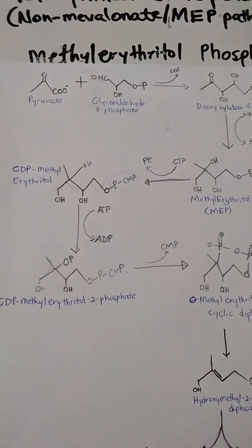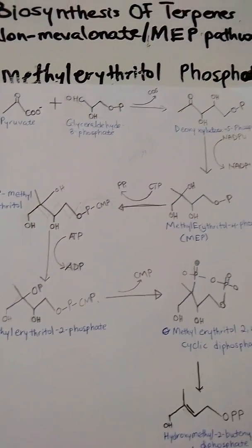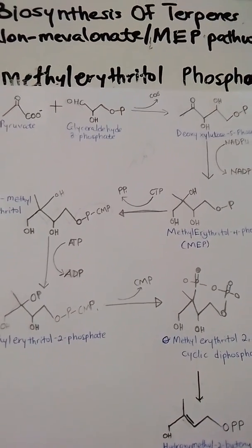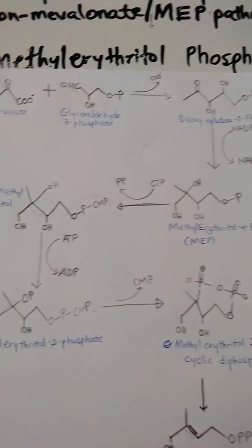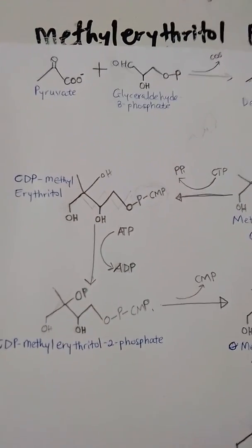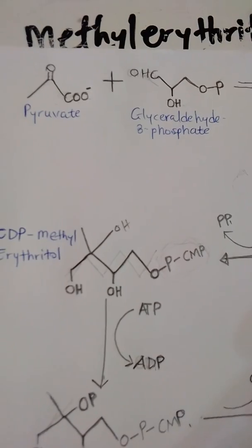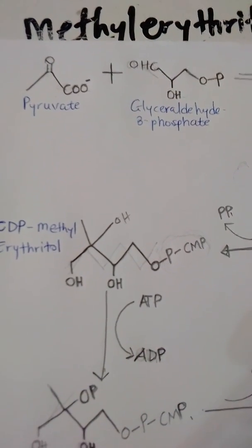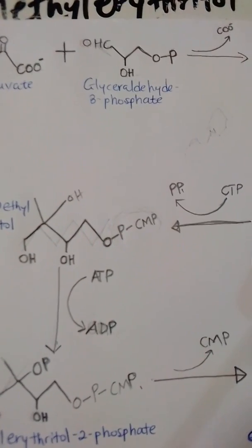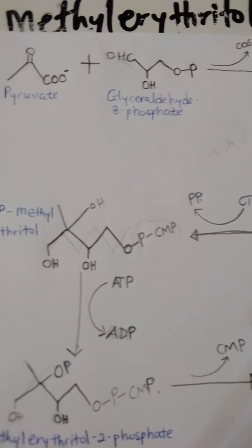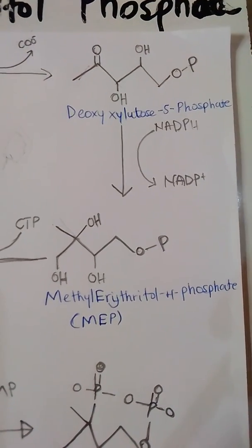Unlike the mevalonic acid pathway, the non-mevalonic acid pathway — or the MEP pathway — is so called because it produces MEP as an intermediate. This pathway uses pyruvate and glyceraldehyde 3-phosphate. These two molecules undergo a condensation reaction followed by a decarboxylation reaction to yield deoxyxylulose 5-phosphate.